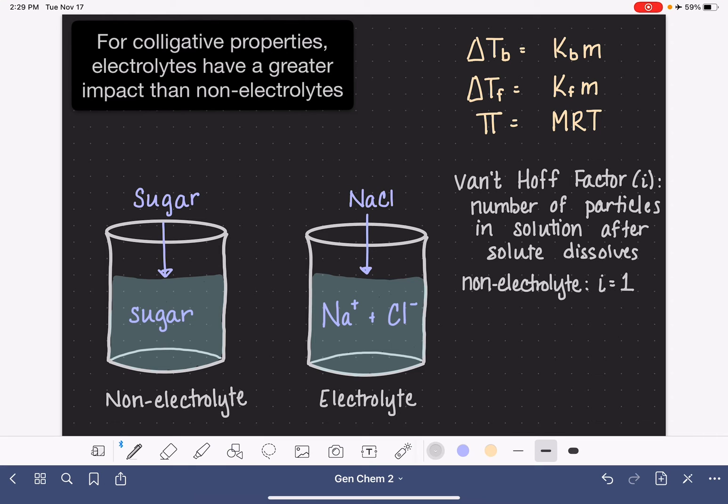But for an electrolyte, the value of the van't Hoff factor depends on how many cations and how many anions you have present in that solution. So for sodium chloride, as we've seen, there's one cation, there's one anion, that's a total of two particles. The van't Hoff factor is two.